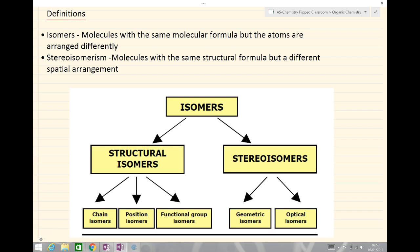So we'll start with definitions. First of all an isomer. Isomers are molecules with the same molecular formula, but the atoms are arranged differently. And from this we end up with two types of isomers, we have structural isomers and stereoisomers.